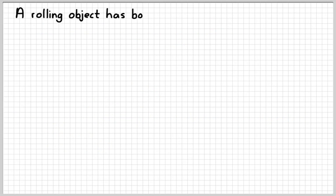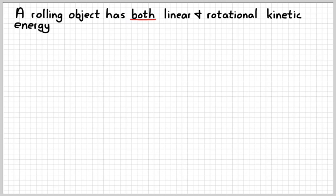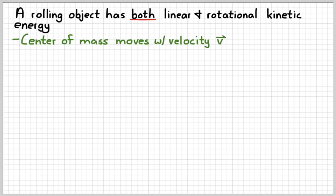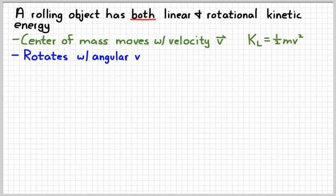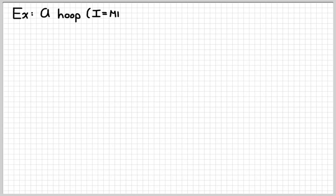A rolling object has both linear and rotational kinetic energy, and we have to account for both. To summarize: the center of mass moves with velocity v, so linear kinetic energy equals one-half mv squared. It also rotates with angular velocity omega, so rotational kinetic energy equals one-half I omega squared. And remember, omega equals v over r.